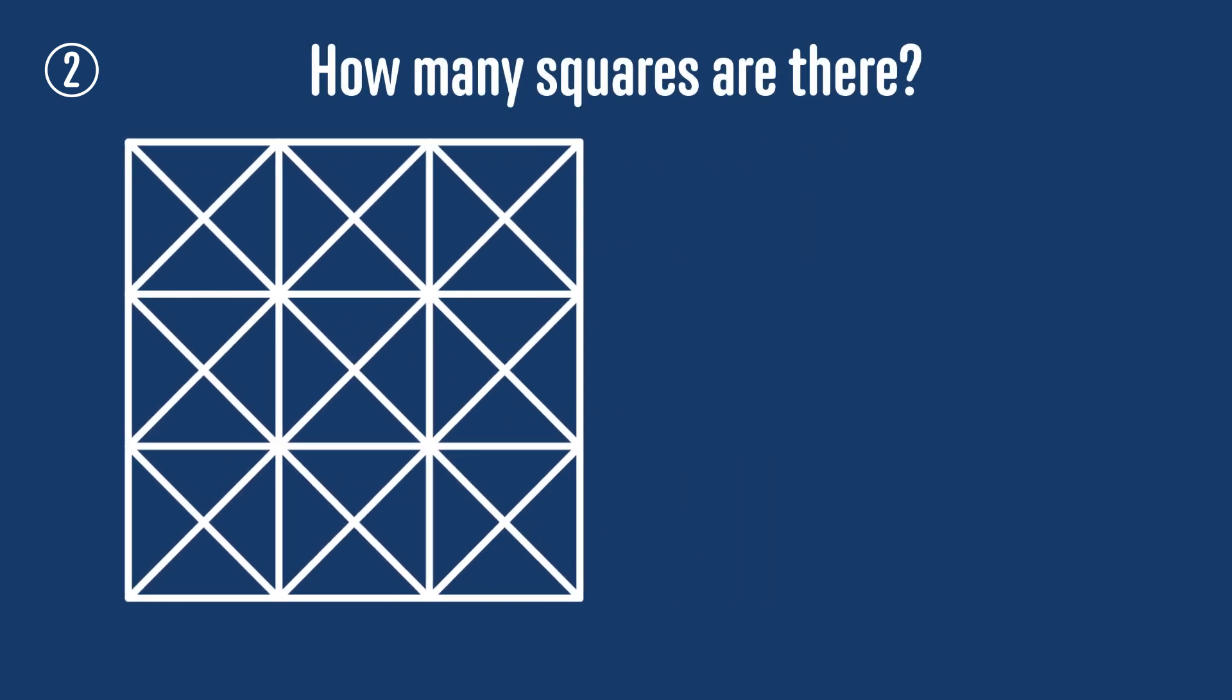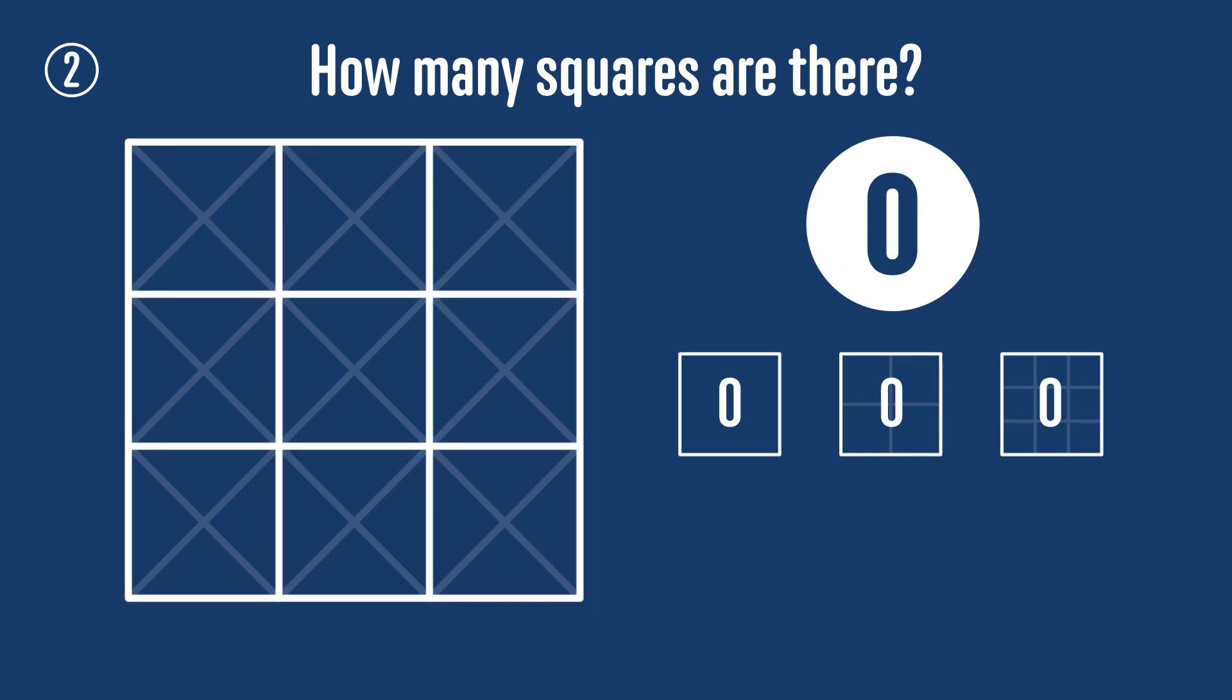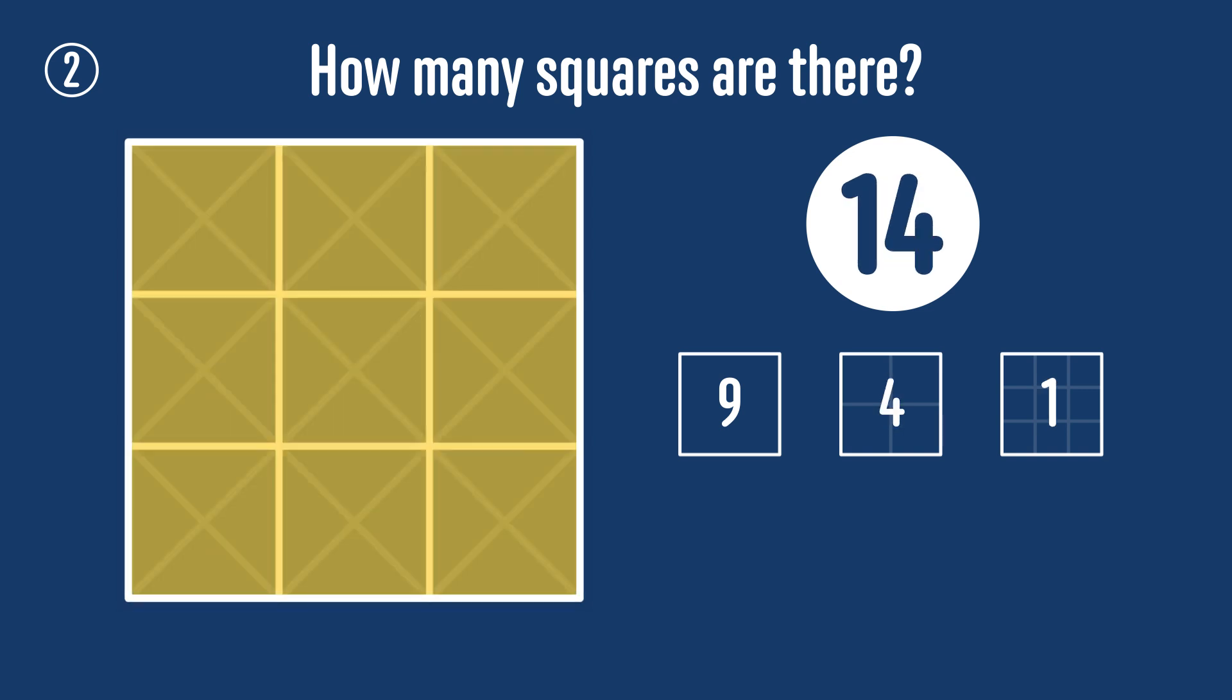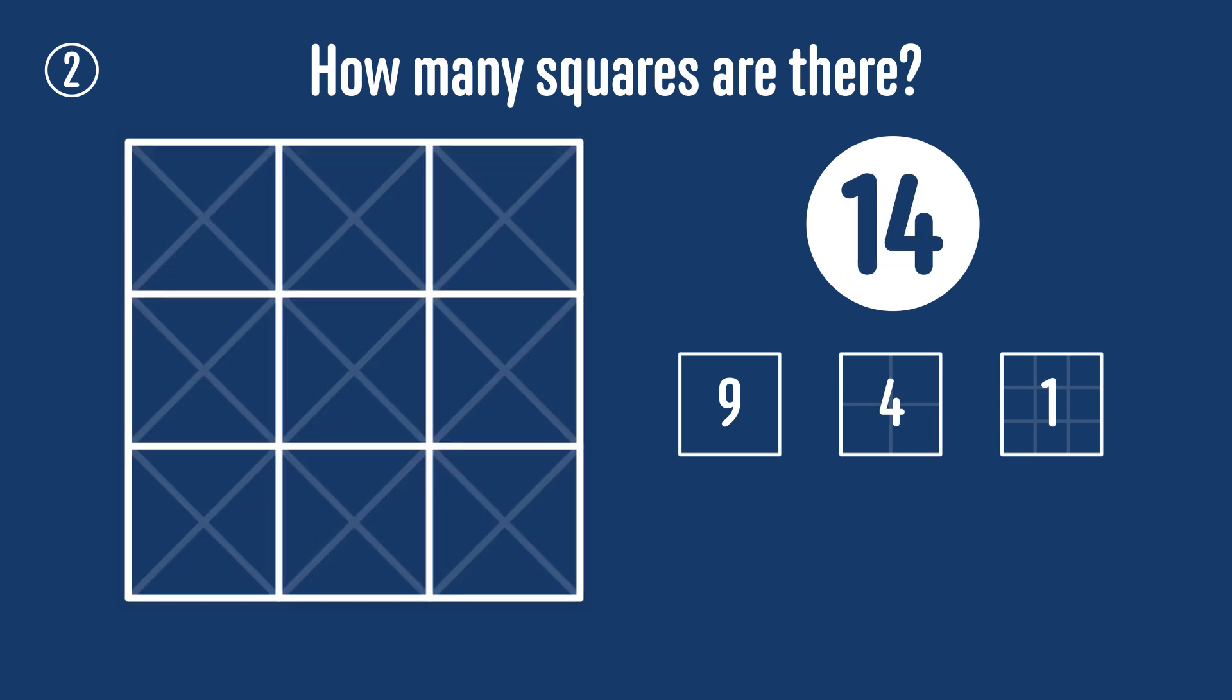We start by counting the squares that are formed by the horizontal and vertical lines in the diagram. These form a three by three grid in which there are nine one by one squares, four two by two squares, and one large three by three square for a total of 14 squares.